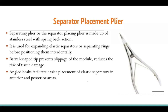The separator plier is made of stainless steel with a spring-back action. It is used for expanding elastic separators or separator rings before positioning them interdentally. A barrel-shaped tip prevents slippage of the module and reduces risk of tissue damage. The angled beak facilitates easier placement of the elastic in anterior and posterior regions. When purchasing a separator plier, look for two things: a barrel-shaped tip and an angled beak — not straight.